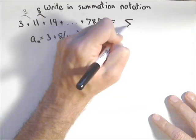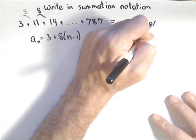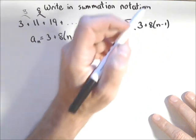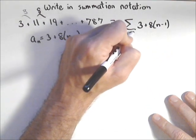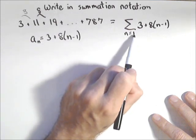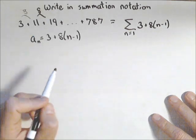Because when I go to write this up in summation notation, the first thing I'm going to do is put in my general term: 3 plus 8 times n minus 1. Now because of the way I did it, I'm automatically going to start at n equals 1. Now we can check. If I plug in 1, 1 minus 1 is 0, so that cancels this part out and it's 3, so that checks out.